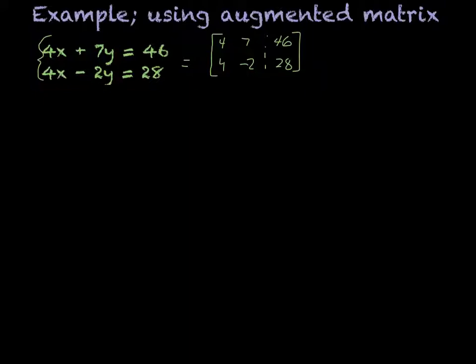Now what I want to do is get a 1 in the upper left-hand corner, because that is supposed to be a 1 in my identity matrix. If I multiply the first row by 1/4, then what I would get would be 1, 7/4, and 46 divided by 4, which is actually going to be 23/2 simplified.